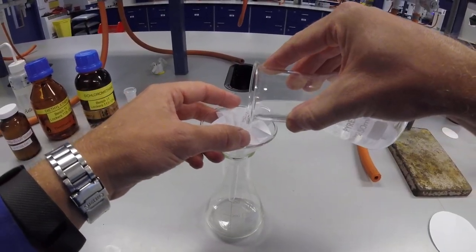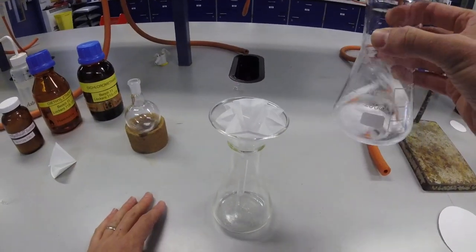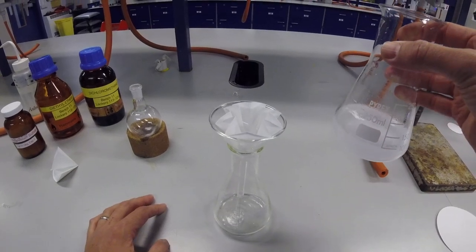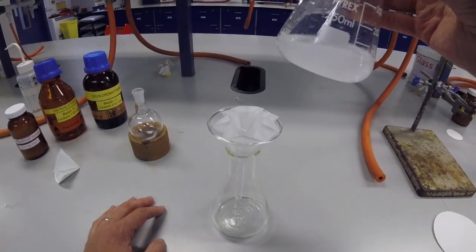And so when you pour your liquid in, it will filter much faster, much quicker and easier for you. And now we can filter off the magnesium sulphate.